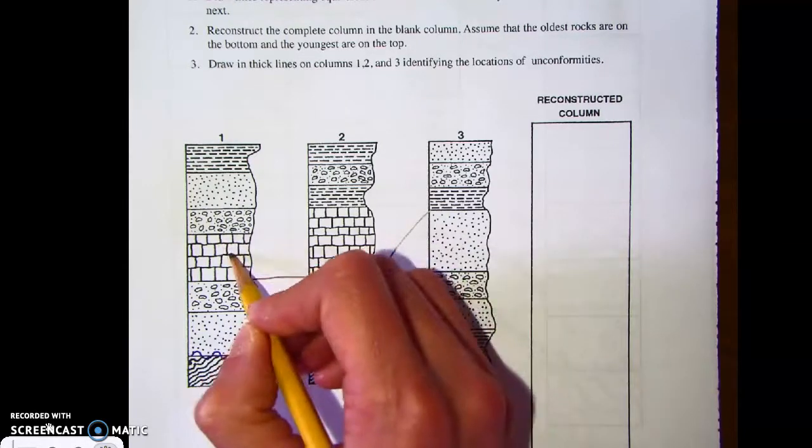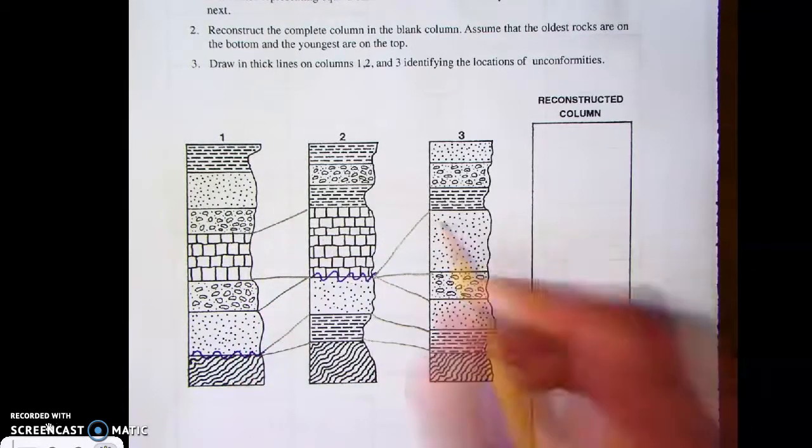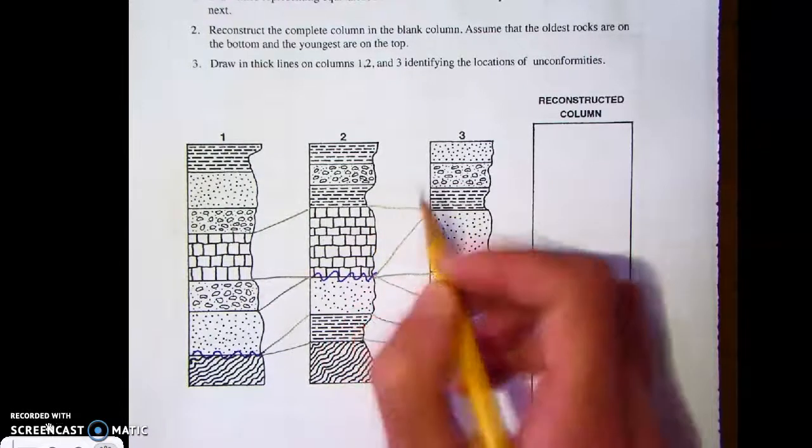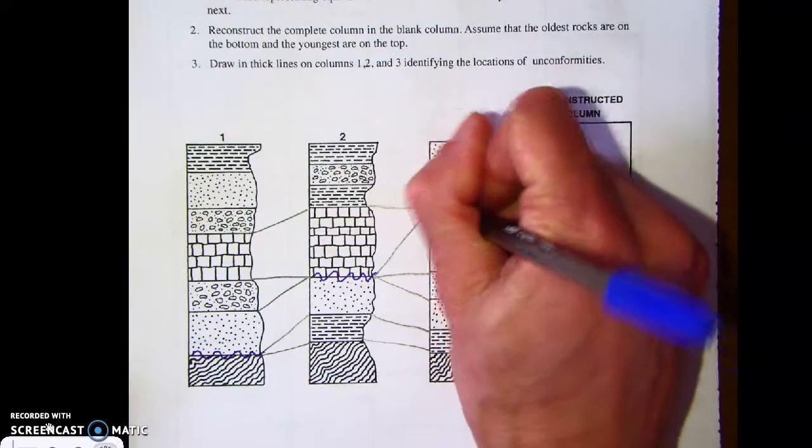Now if we look to the limestone, we have limestone here and here, so I can connect those. Limestone is totally gone in column three. So again, we have another unconformity. The limestone is missing.